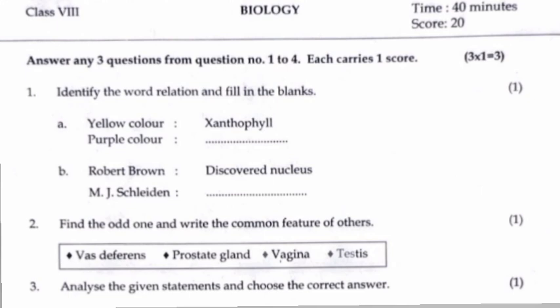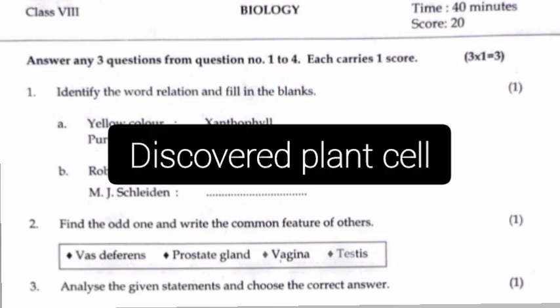Robert Brown discovered the nucleus. M.J. Schleiden: Plant is made up of cells.